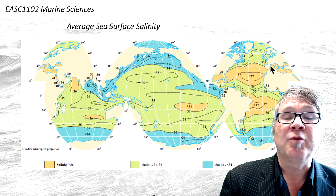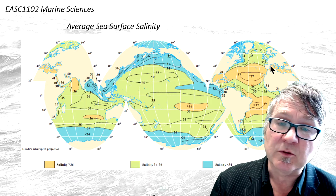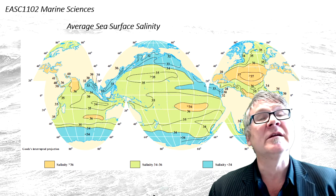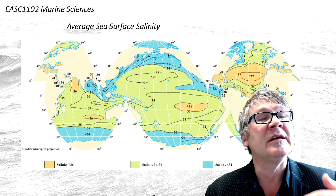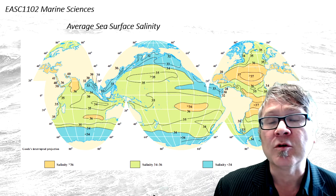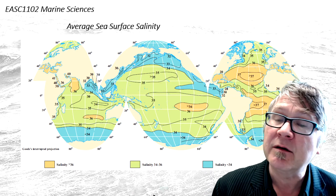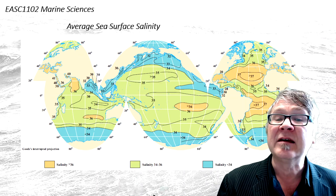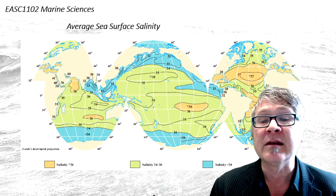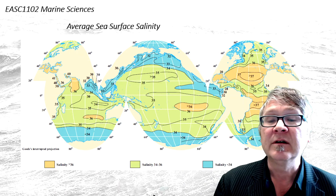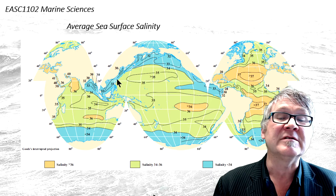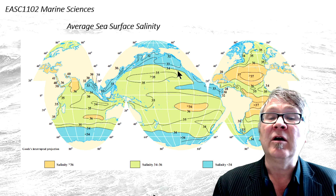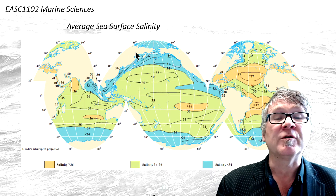In polar regions, what creates relatively low surface salinities is the addition of fresh water through the melting of sea ice and the continental runoff. So you can see the influences of an excess of fresh water.